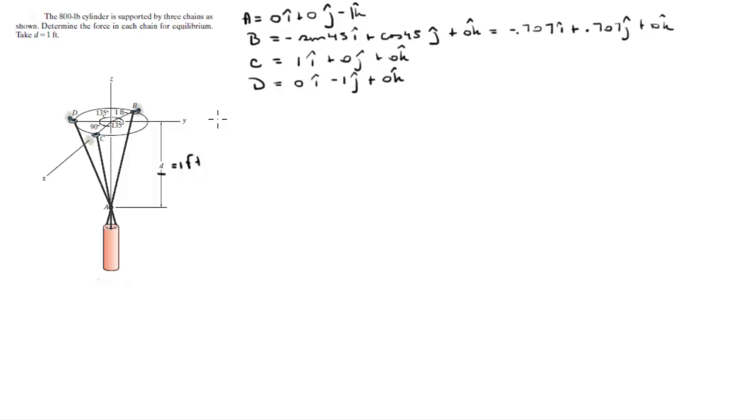You know that the sum of the forces is equal to 0. That means the weight of the crate minus 800 pounds - at A you got the weight of the crate which is 800 pounds, and then you got these three forces going up.